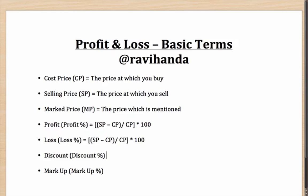Then comes the question of what is the discount. The discount is the mark price minus the selling price. For example, if you are planning to buy a book priced at 200 rupees but at an online store you are able to buy it for 120 rupees, then you have gotten a discount of 80 rupees — that is the mark price of 200 minus the selling price of 120.